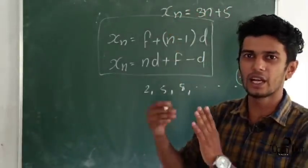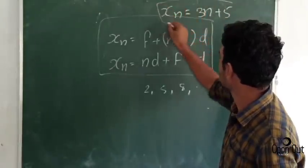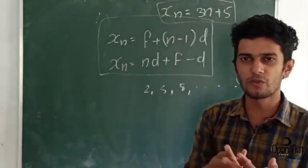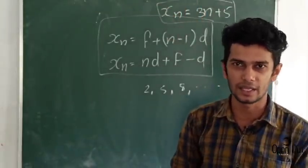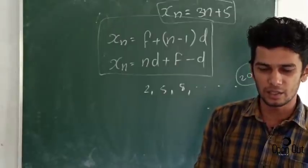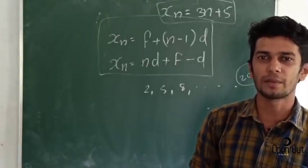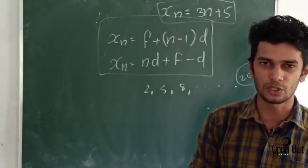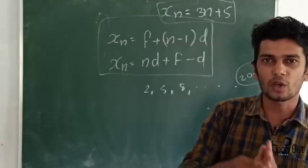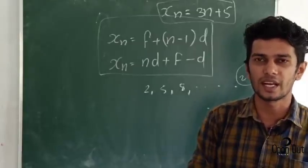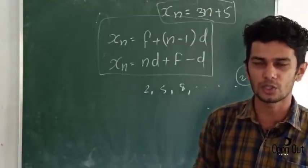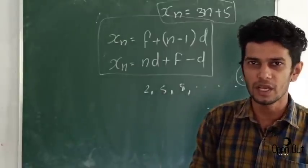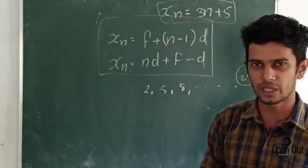If the problem shows us xn is equal to 3n plus 5, and we are trying to solve this problem for the 2nd term, 5th term, and 30th term — what is the common difference? What is the sequence?